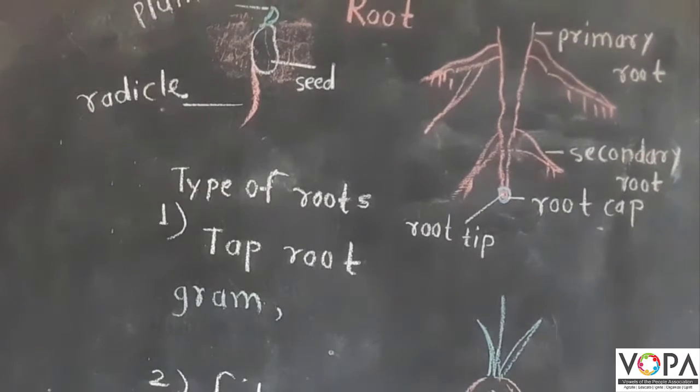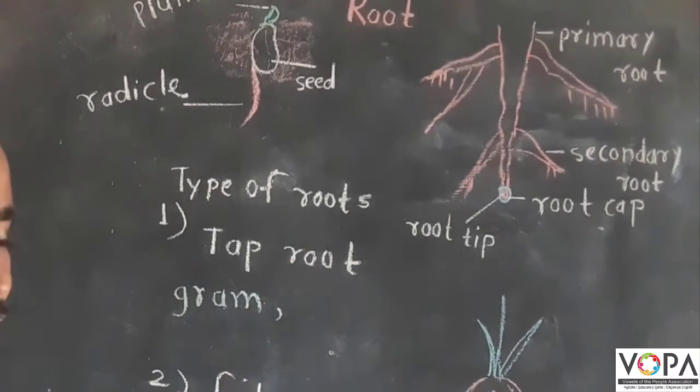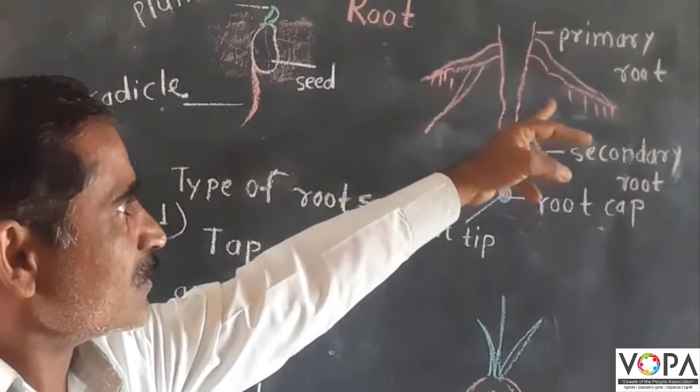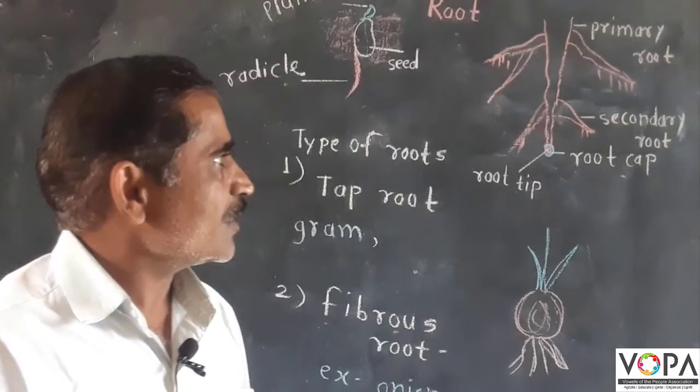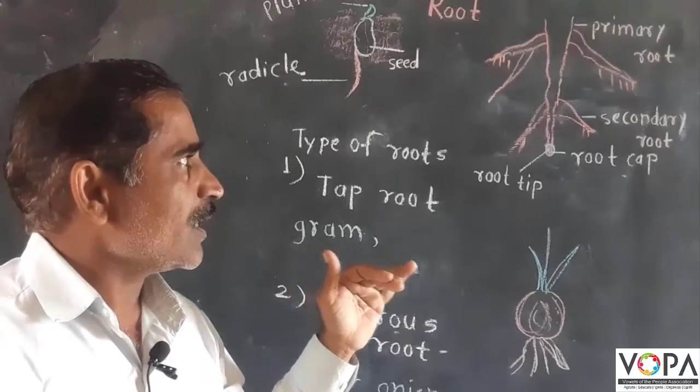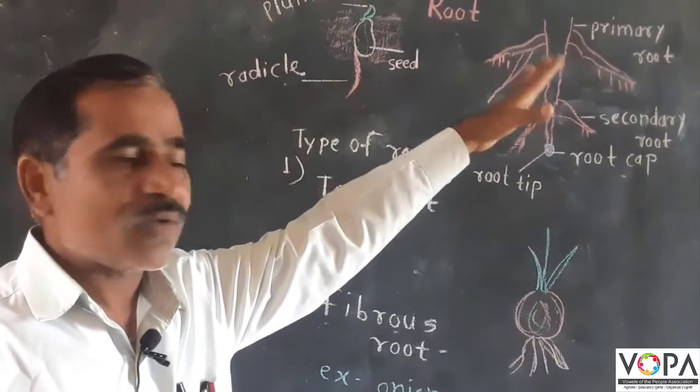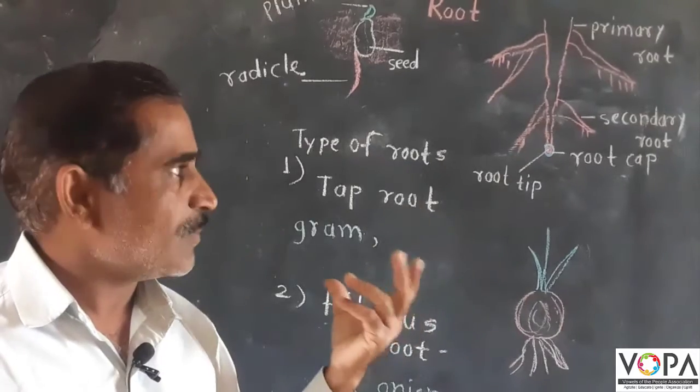There are two types of roots, one is tap root and another is fibrous root. In the tap root, there is the primary root and there is the secondary root. The secondary root also grows obliquely and spreads far and wide and this root also supports the plant.